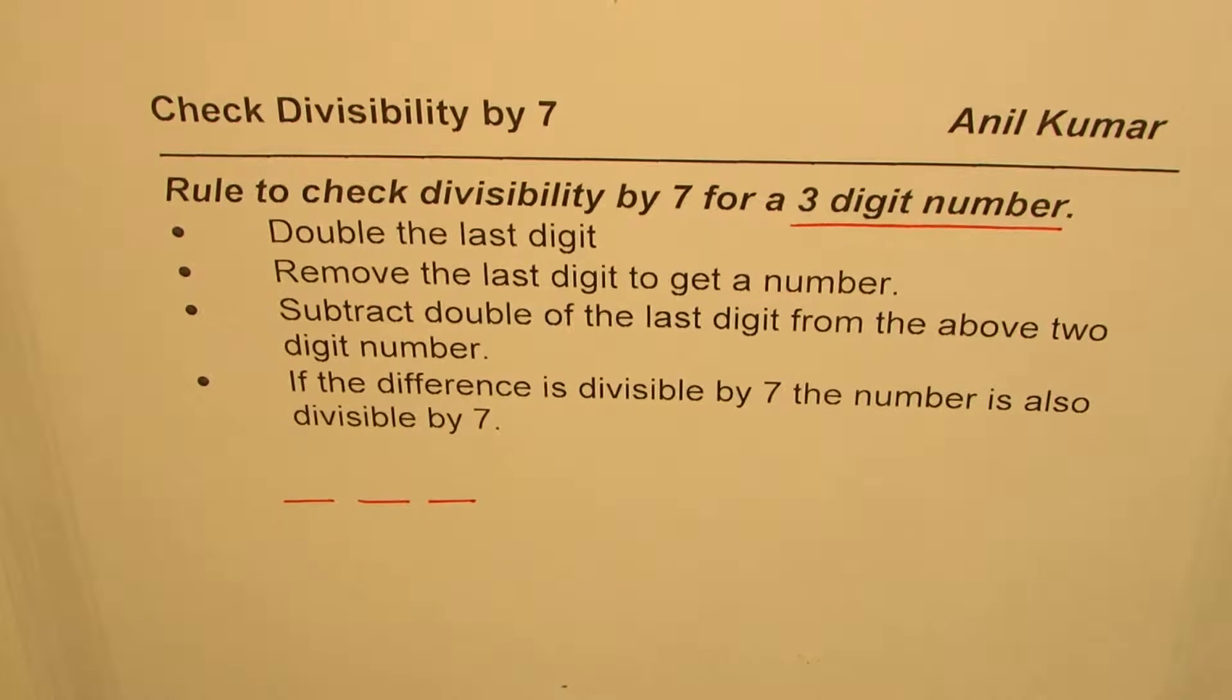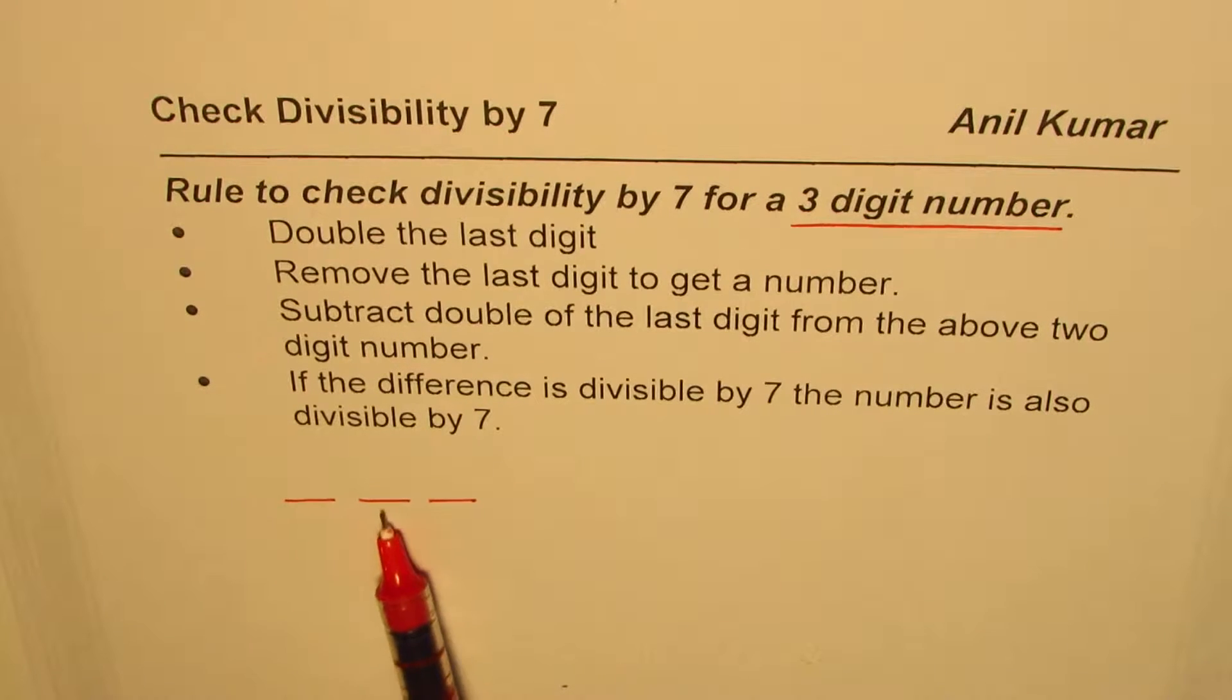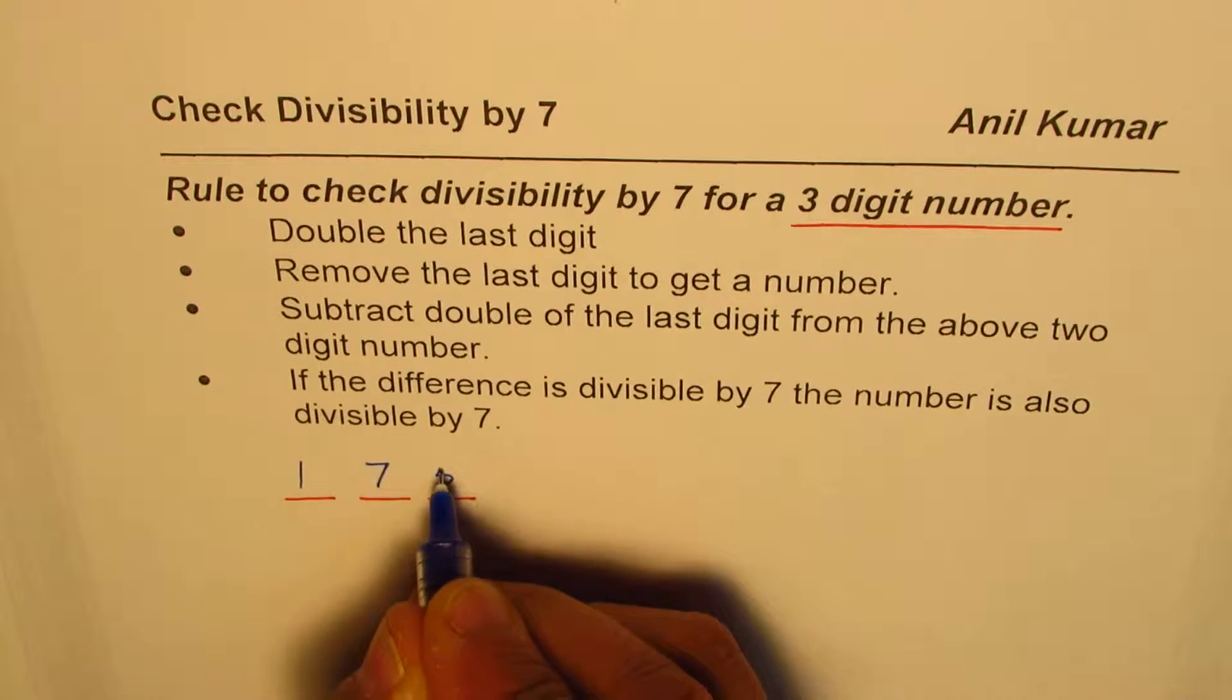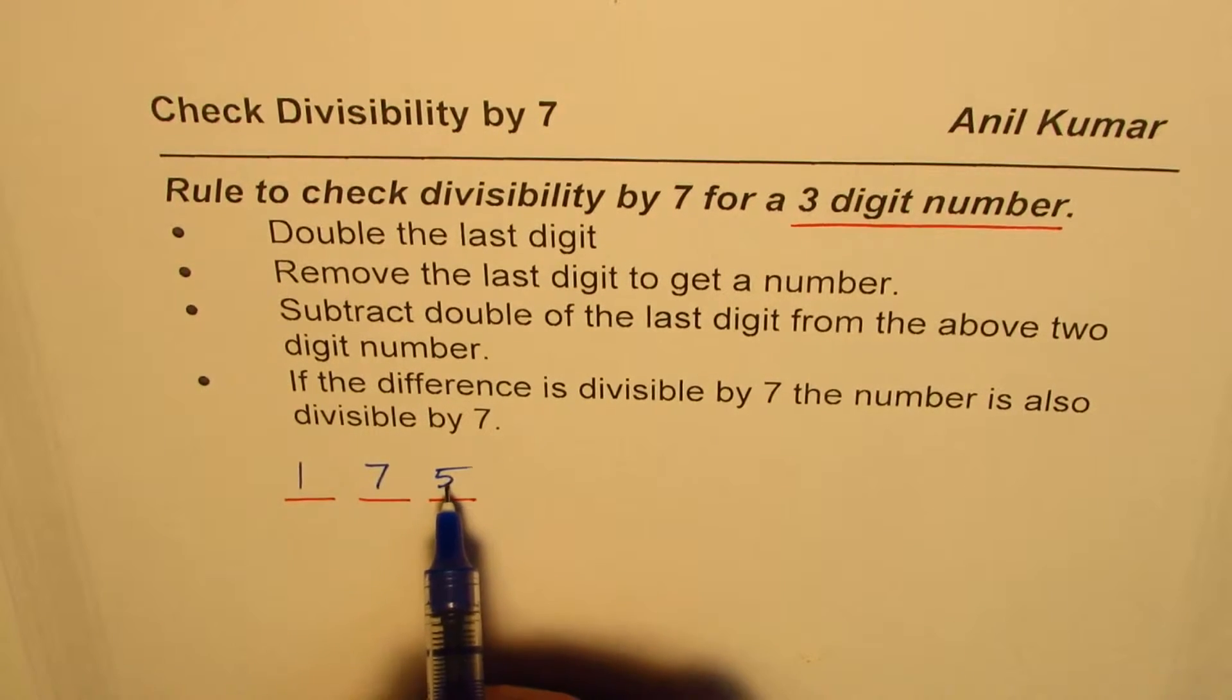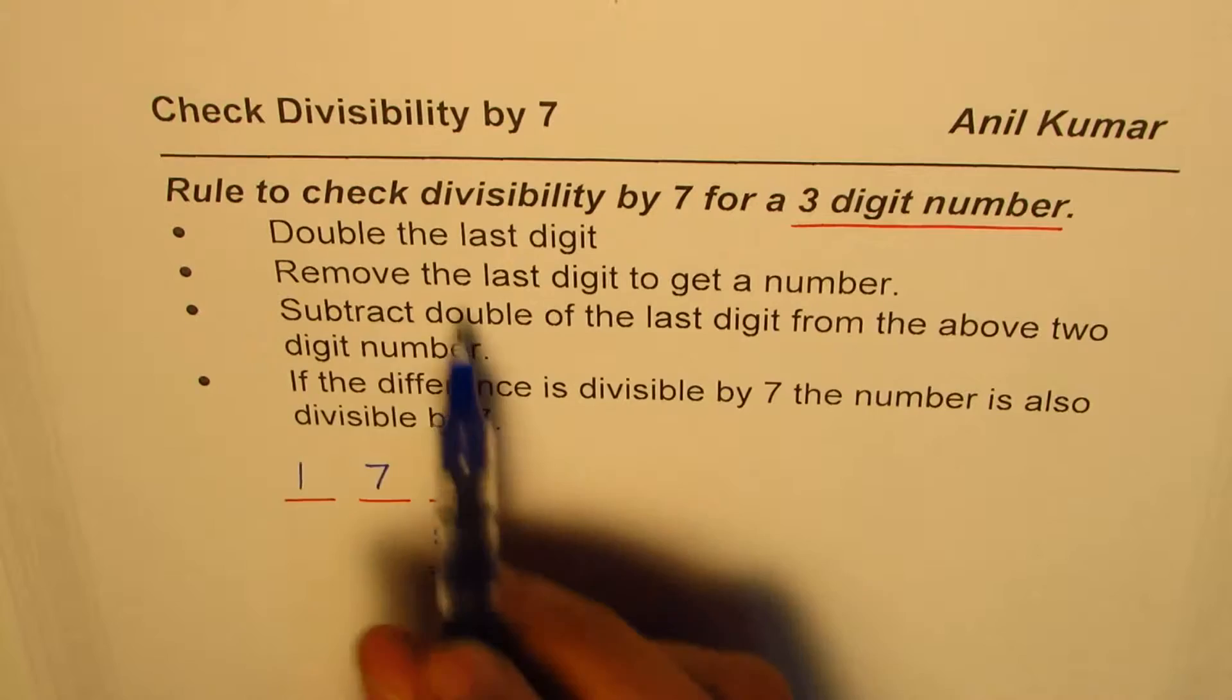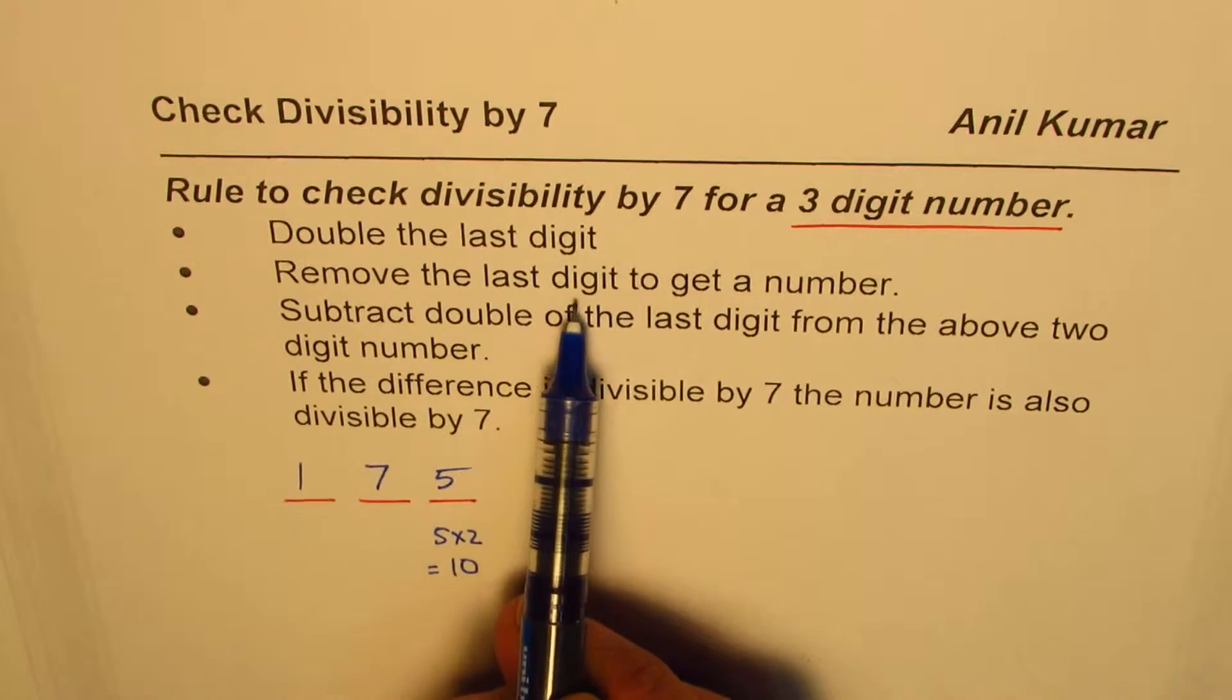The rule is given in these four steps. The first one is double the last digit. If I write a three-digit number, let's say 175, the last digit is 5. We'll double this, so 5 times 2 equals 10. Then we have removed the last digit to get a number.